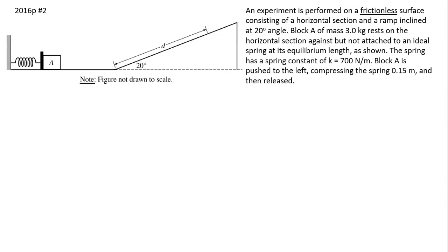Block A of mass 3.0 kg rests on the horizontal section against but not attached to an ideal spring at its equilibrium length. The spring has a spring constant of k = 700 N/m. Block A is pushed to the left, compressing the spring 0.15 meters, and is then released.